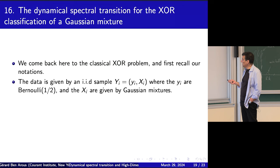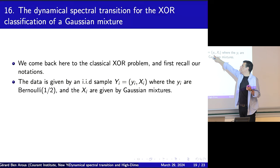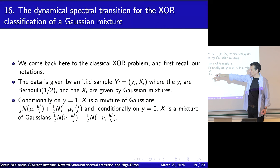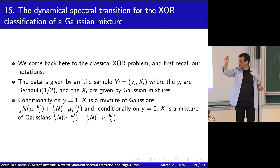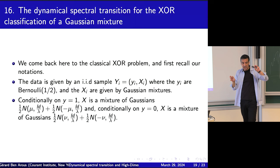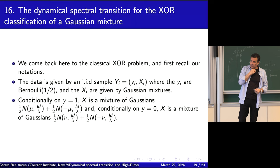Now we come to a harder problem: the XOR problem. The XOR problem with projection and effective dynamics was fascinating. Let's look at it from a dynamical spectral transition point of view. In the classical XOR, we have Gaussian mixtures again, with Y being Bernoulli with probability 1/2. When Y=1, X is a mixture of Gaussians centered at mu and -mu; when Y=0, X is also a mixture centered at mu and -mu. So there are effectively four Gaussian components, but only two classes.